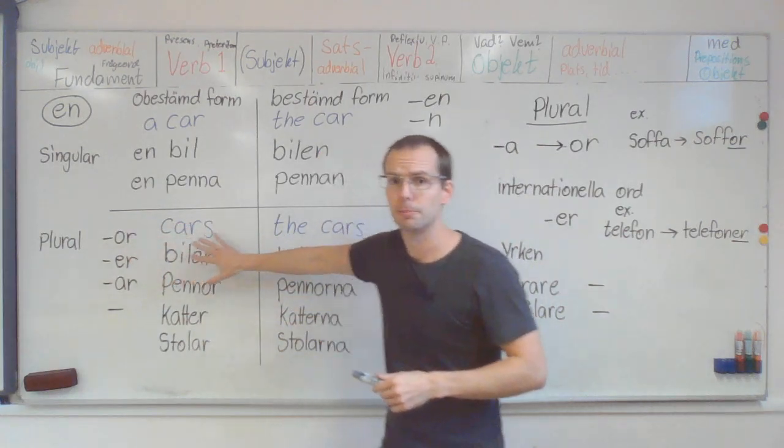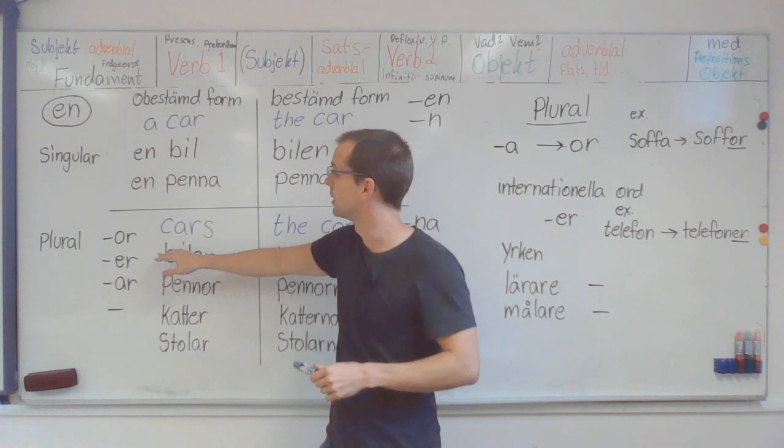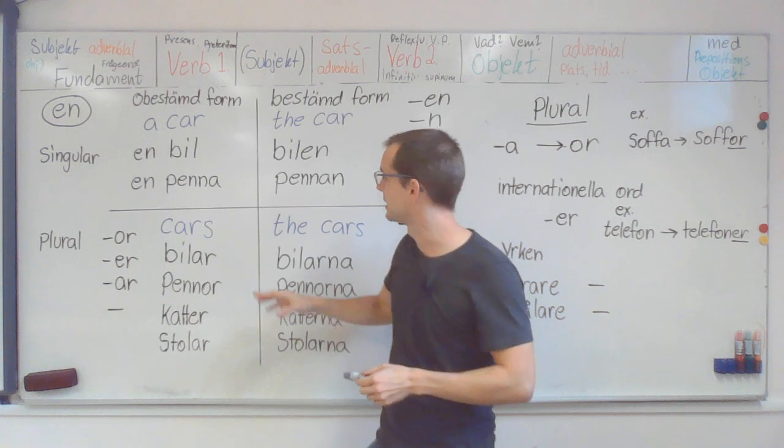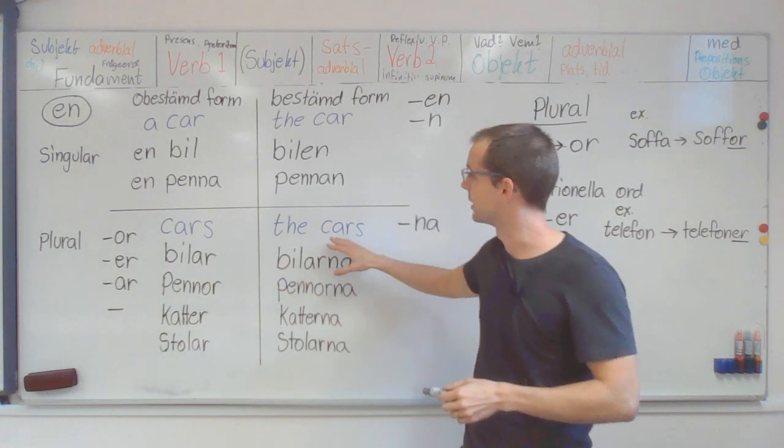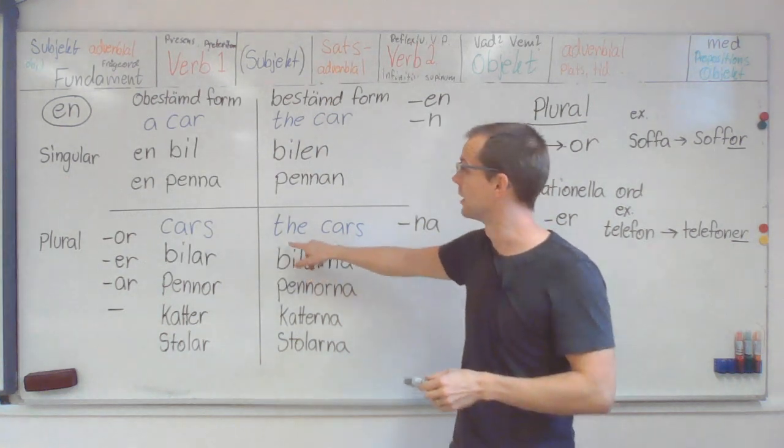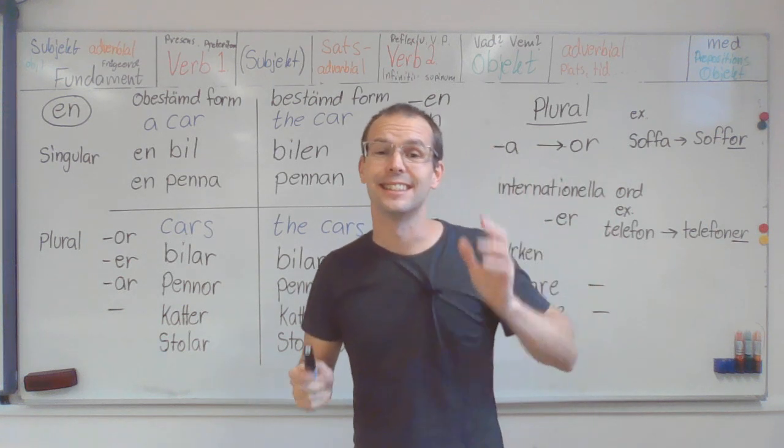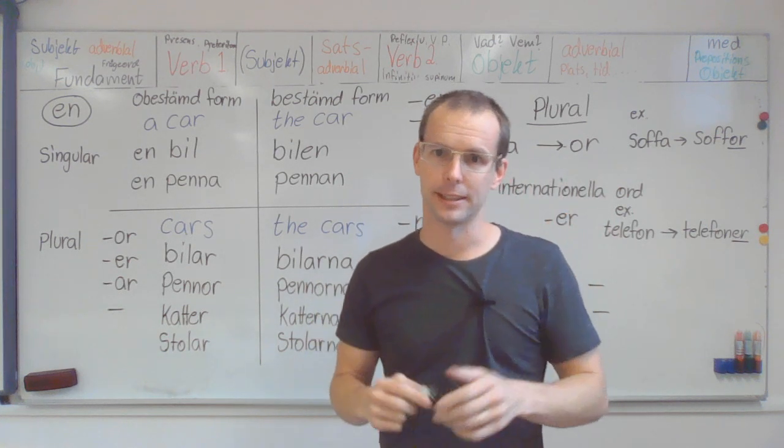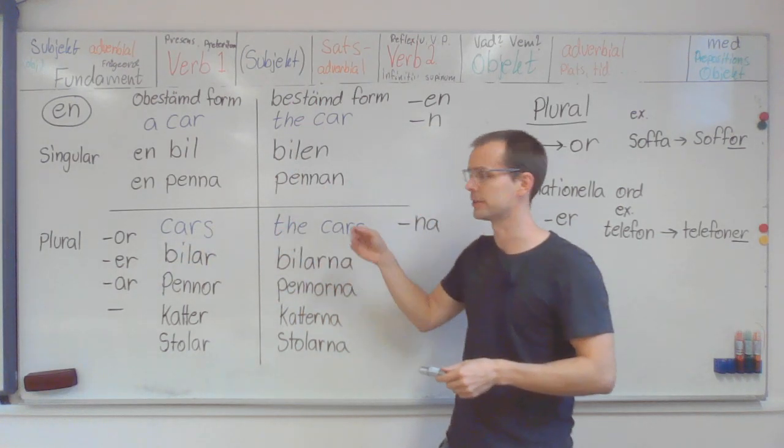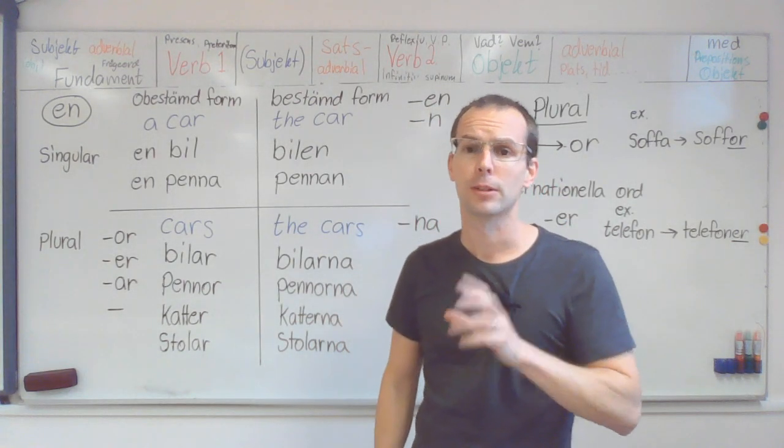Down here we have the plural, plural, undetermined form, the cars. So in English this is very easy. A car, the car, cars, the cars. In Swedish, not so easy.